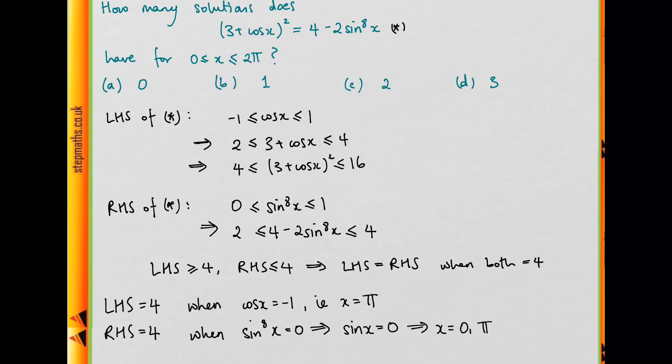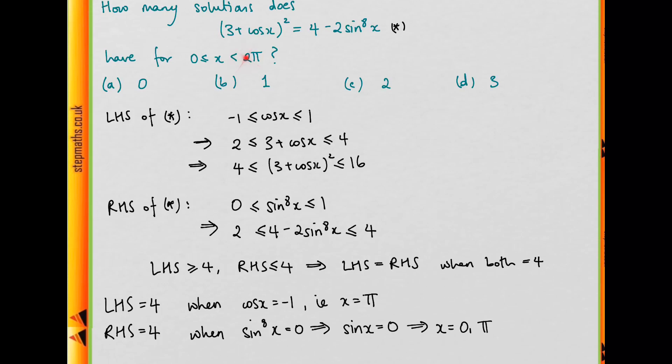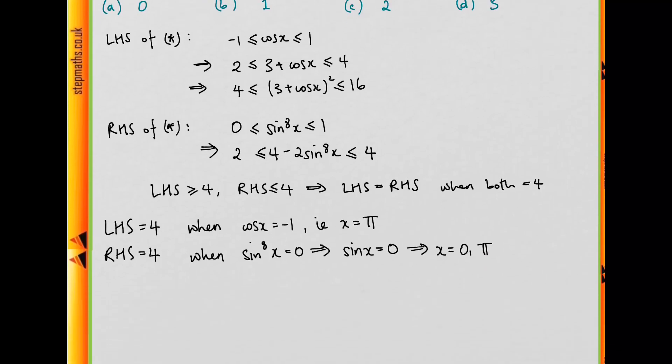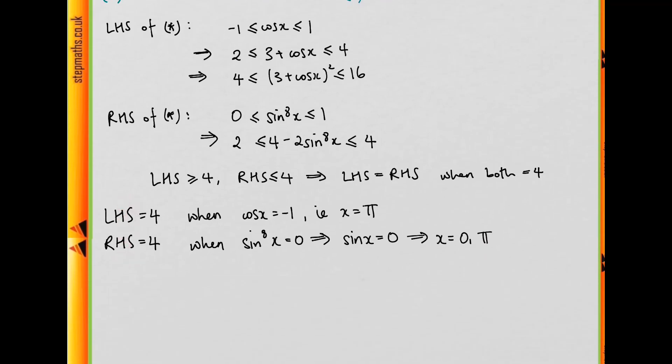I just realized I've written down the range wrong—there is meant to be a strict inequality. We're going to get sin x equal to 0 when x in this range is 0 or π. To get the left-hand side and right-hand side both equal to 4,